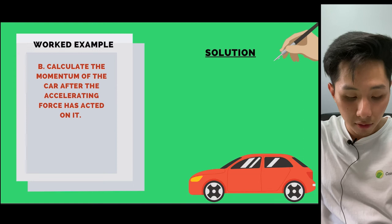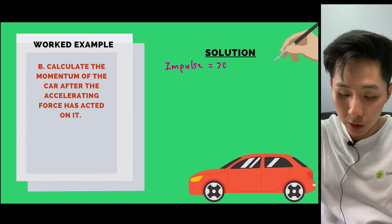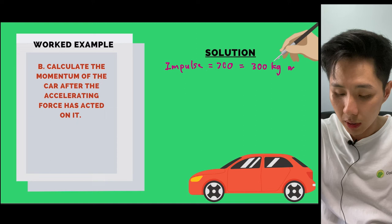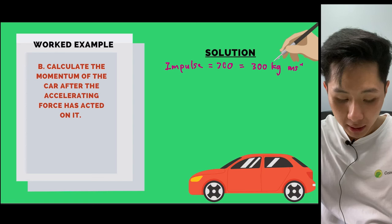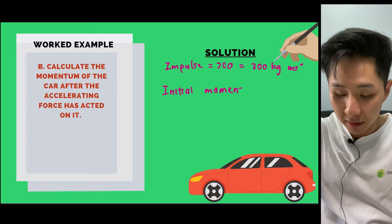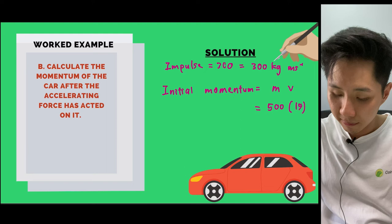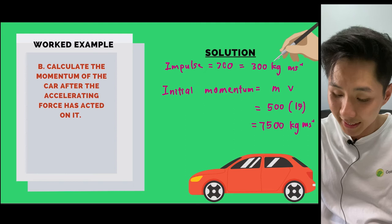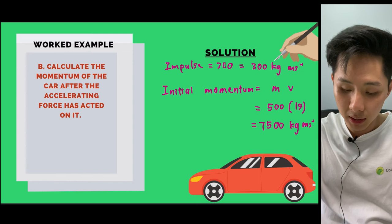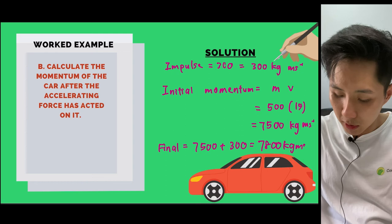Now calculate the car's momentum after the accelerating force has acted. We know impulse = change in momentum = 300. First find the initial momentum: p = mv = 500 × 15 = 7,500 kg m/s. Then the final momentum is 7,500 + 300 = 7,800 kg m/s.